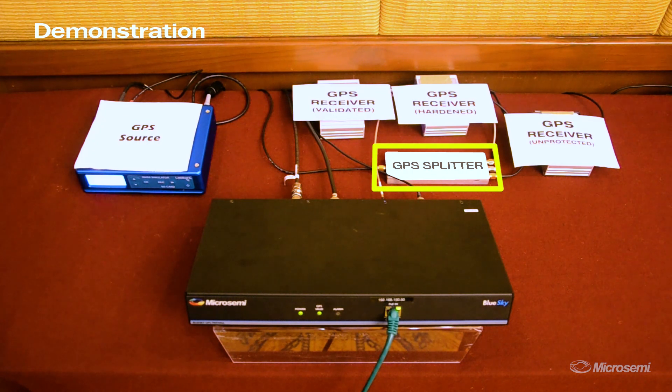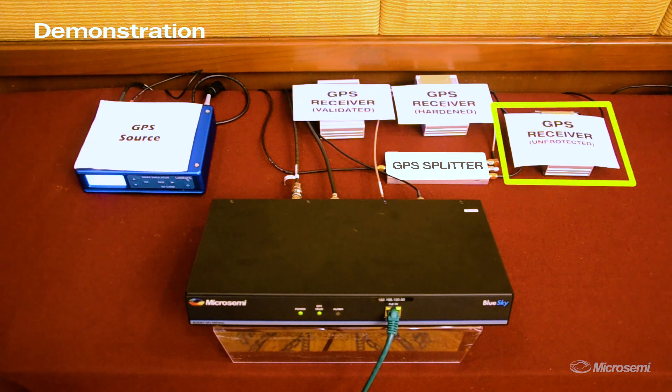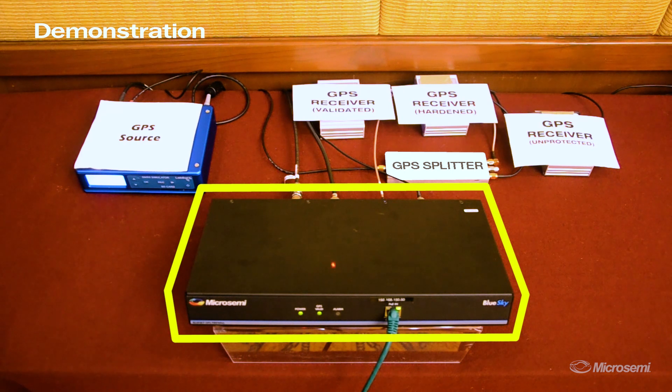This GPS source is fed into a GPS splitter. The GPS splitter provides the signal to two places. First, it provides it to a GPS receiver that is completely unprotected, similar to what you'd find in critical infrastructure today. The second output from the GPS splitter is connected to the input of the blue sky GPS firewall.